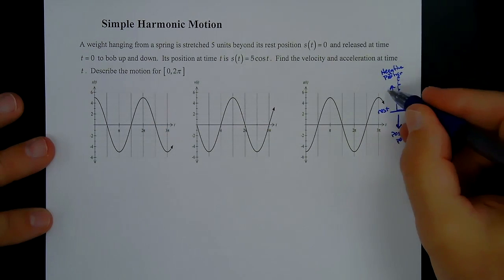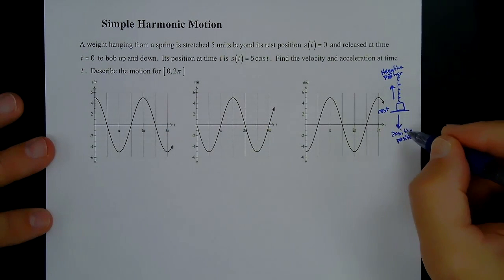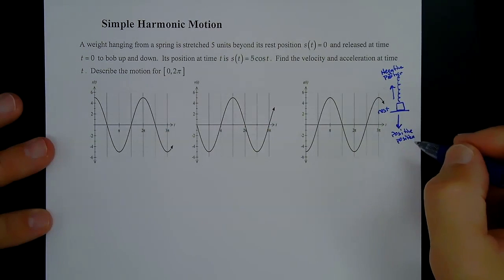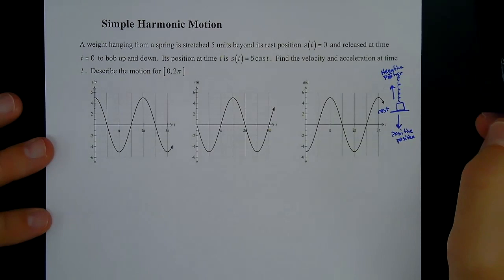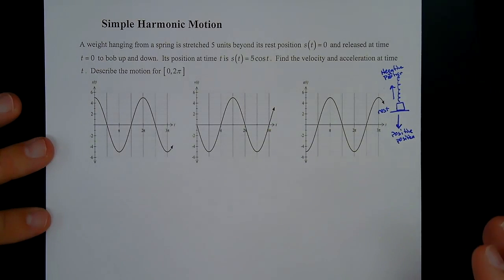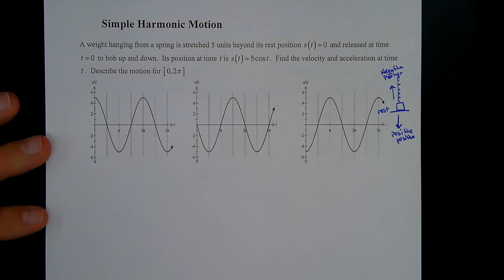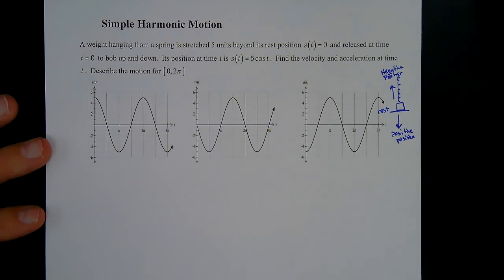Once it starts moving up, that's actually negative velocity, because we're going in the negative position direction, and positive velocity means it's going down. A weight hanging from a spring is stretched five units beyond its rest position — s(t)=0 — and released at t=0 to bob up and down. Its position at time t is given by s(t) = 5cos(t), and we want to find the velocity and acceleration at time t.